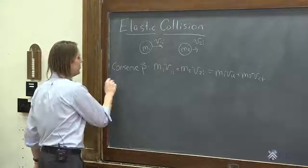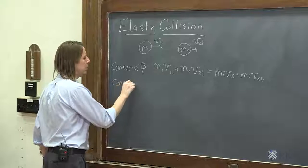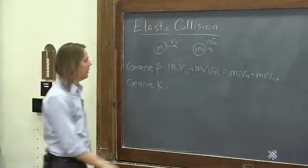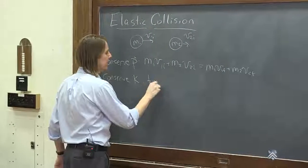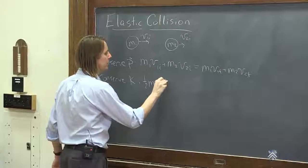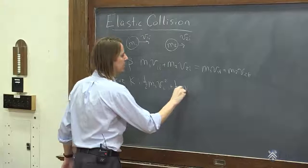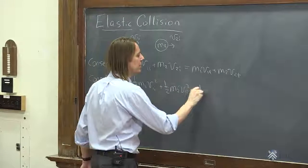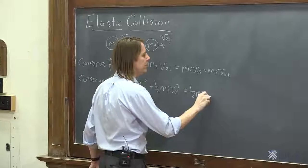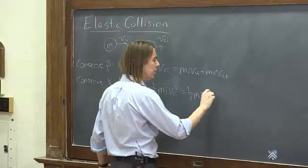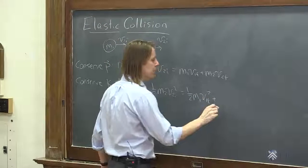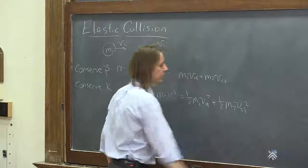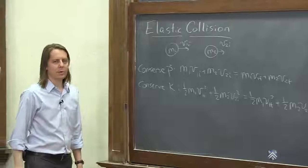We also want to conserve kinetic energy. So we write: one-half M1·V1i² plus one-half M2·V2i² equals one-half M1·V1f² plus one-half M2·V2f².